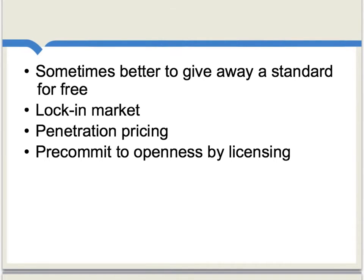If you're a company trying to establish your product or standard as the dominant one in the market, you may behave in ways that at first glance would look unusual. Sometimes it's better to give away a standard — or parts of it — for free in its early days to help it establish a market foothold as the dominant standard. That would mean, for instance, that early Blu-ray players probably were not sold at a maximum price. The purpose was to get enough people interested so that in the long run Blu-ray is seen as the thing to buy, locking in the market. This is sometimes called penetration pricing — the price in early periods starts off being rather low, and later the price may go up as you have a firmer and more established market base.